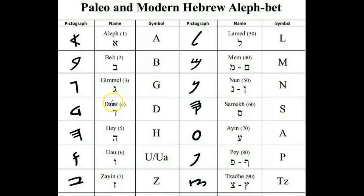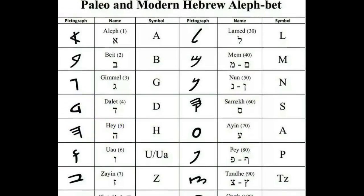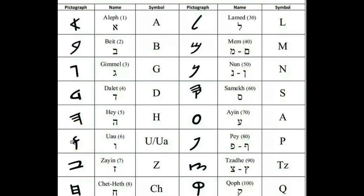Then we have the Dal, or Dalet, which is the door. This is how it looks in the modern Hebrew and it makes the D sound. Then we have the Ah, or Hey, which can make an H or an AH sound, and this represents behold. The next letter is the Oo, which represents a nail or tent peg — in modern Hebrew it makes the Oo sound, so think of the word pool or room.